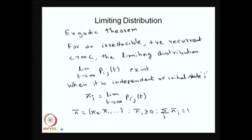I am first giving the Ergodic theorem. Whenever the CTMC is irreducible — meaning all the states are communicating with all other states — if one state is of a particular type, say positive recurrent, then all the other states are also going to be positive recurrent. Here I am making the assumption that the CTMC is irreducible as well as all states are positive recurrent, and then the limiting distribution always exists.